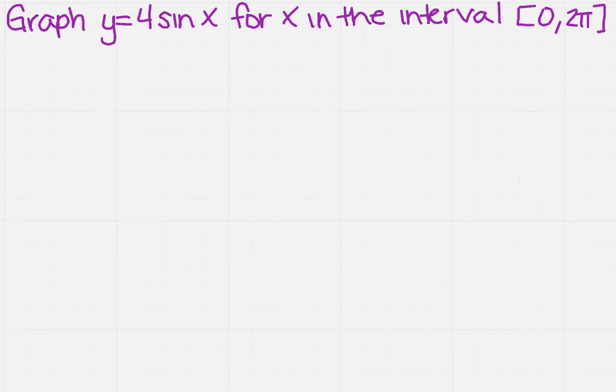Graph y equals 4 sine x for x in the interval between 0 and 2π, including both. So now how are we going to do that? Well, the easiest way, since we're not using a graphing calculator, is that we're actually going to need to find those points. So what that means is we're going to do x, and then we're going to have y equals 4 sine x.